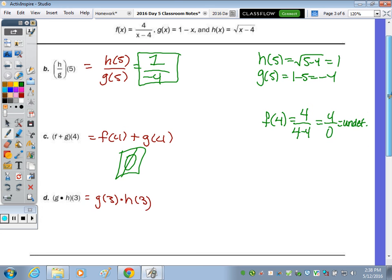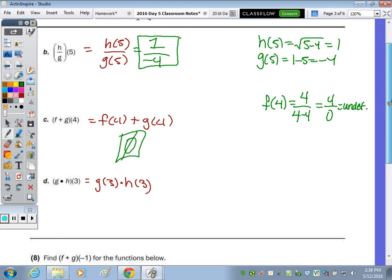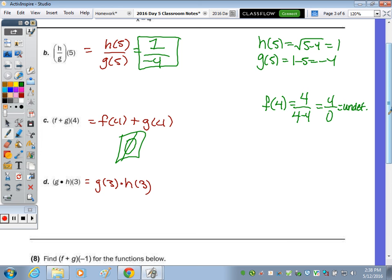G of 3 times H of 3, so G of 3 is equal to 1 minus 3, negative 2, times H of 3, square root of 3 minus 4, which is the square root of negative 1. And what is the square root of negative 1? I. So negative 2 times I is negative 2 I.